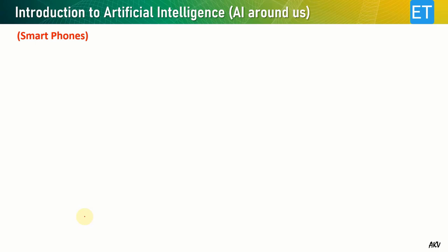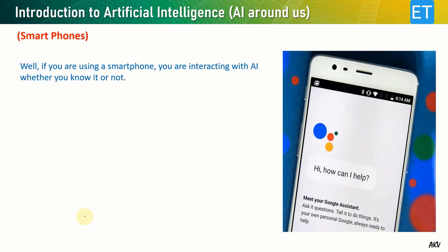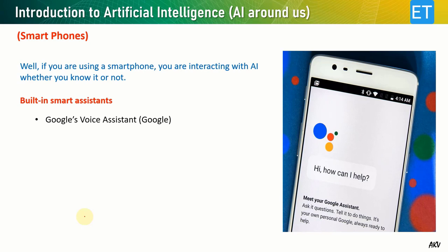The first application area is smartphones. When we use a smartphone we are interacting with artificial intelligence whether we know it or not. We have various built-in smart assistants, for example Google's voice assistant. When you say 'OK Google' it wakes up and asks how it can help. You can ask it to call a person, fix a meeting, find a place on Google Maps, or play particular music.